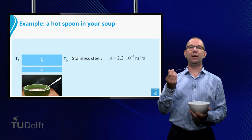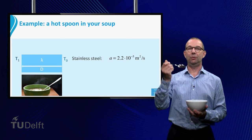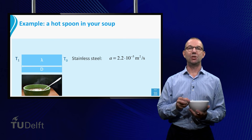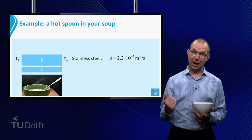Your silverware is probably made of stainless steel. So we look up the thermal diffusivity of stainless steel. It is 2.2 times 10 to the minus 5 meter squared per second.